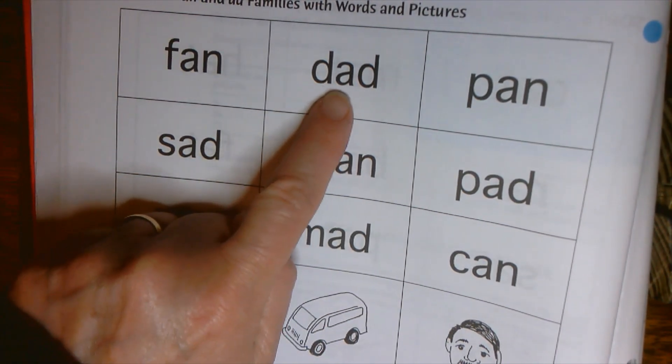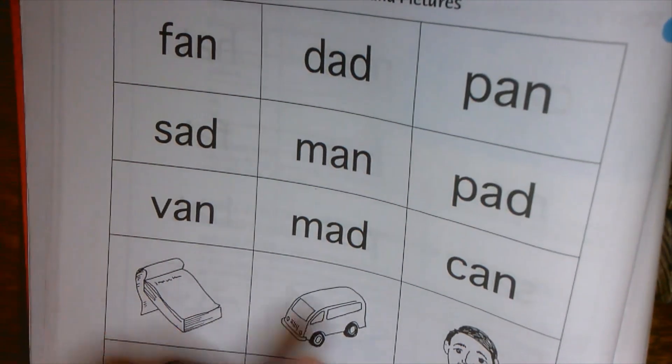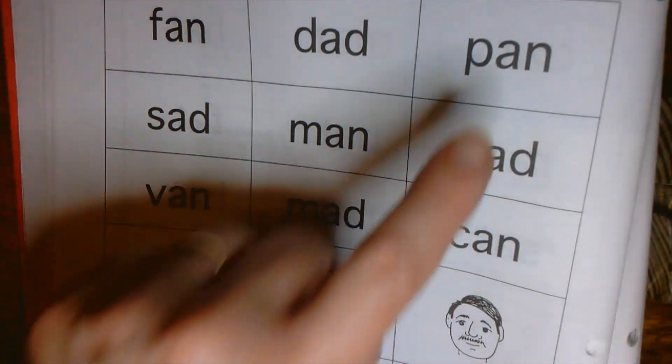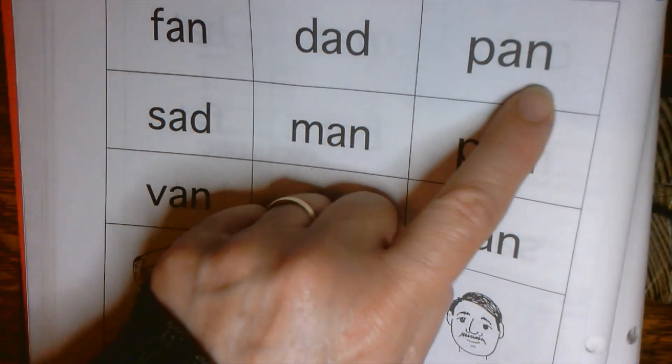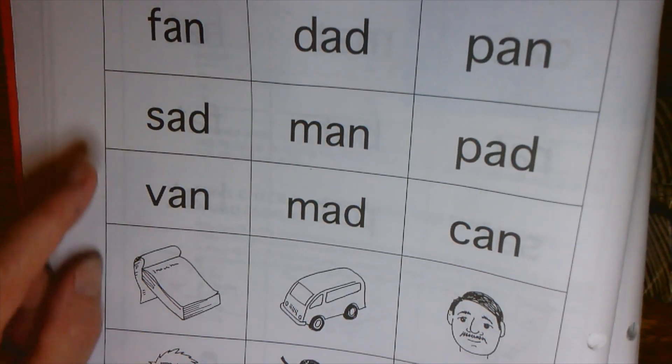Here's D, AD, DAD. You can find the one that looks like DAD. P, AN, PAN. You have one here that looks like a frying pan.